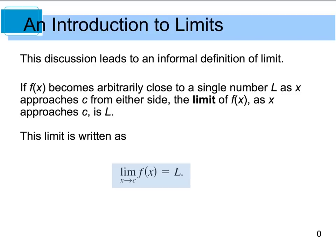Your informal definition states that if f(x) becomes arbitrarily close to a single number L as x approaches C from either side, because for a limit to exist it has to approach the same thing from both sides, then we say the limit of f(x) as x approaches C is L.